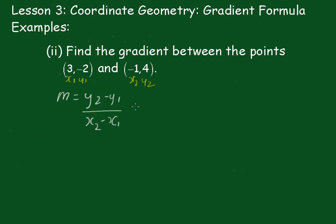And that gives me 4 take away negative 2 over negative 1 take away 3. That gives me 4 take away negative 2 is going to be 6, and minus 1 minus 3 is negative 4. And that reduces down to the negative gradient of minus 3 over 2.